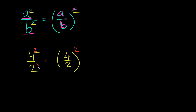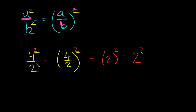We have the same exponent on top and bottom, so we keep it. Four over two is simply equal to two, and we still have our exponent of two. So this is simply equal to two squared, which is two times two, which equals four.